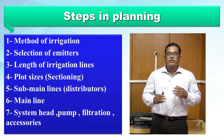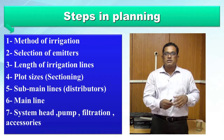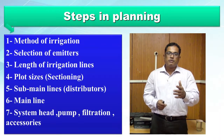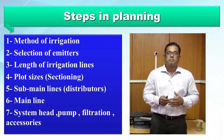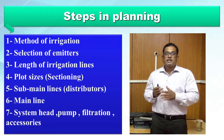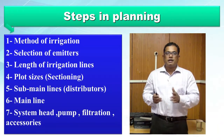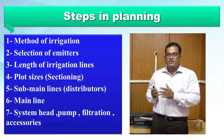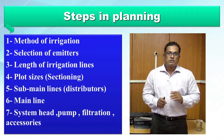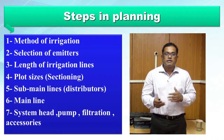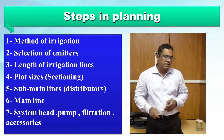Emitter selection also depends on the topography of the area. If the land is undulating, sloping up or down, we must go for a pressure-compensating dripper, where the discharge remains more or less the same regardless of undulation. If the land is flat, we go for NPC — non-pressure compensating drippers.